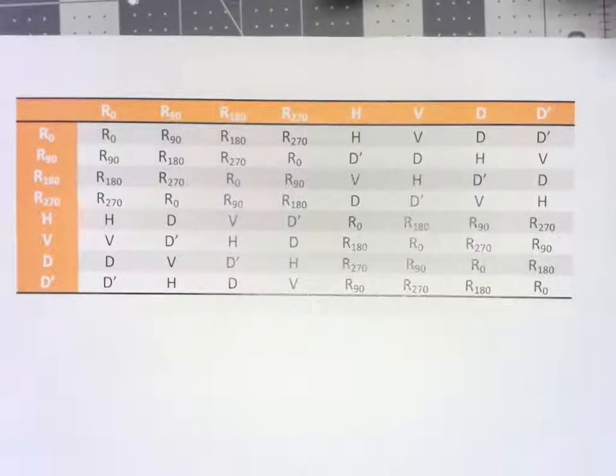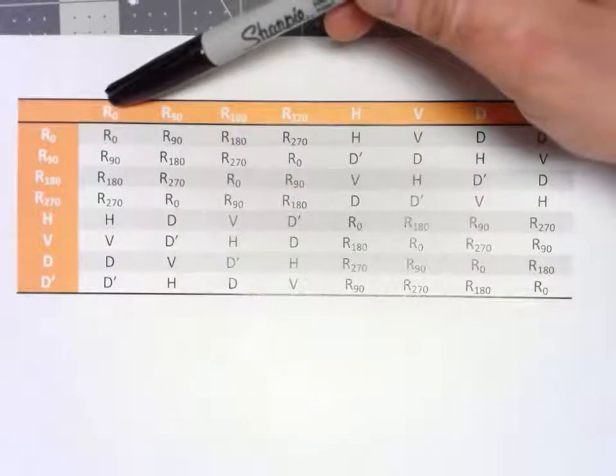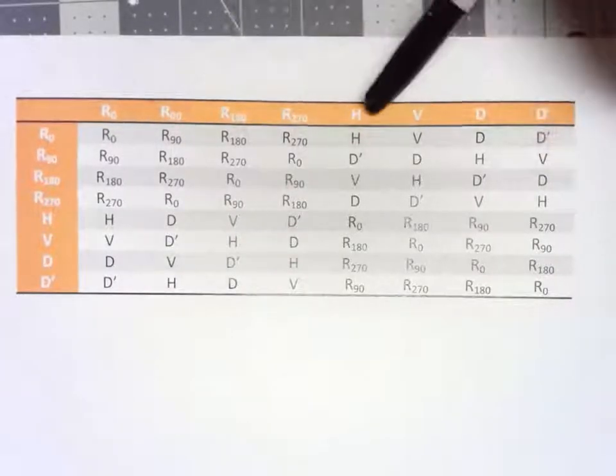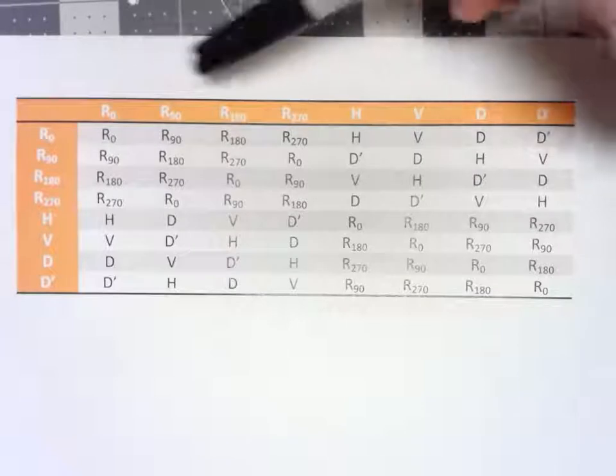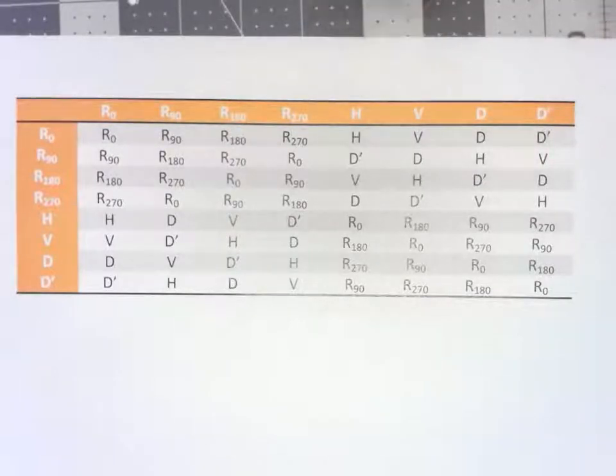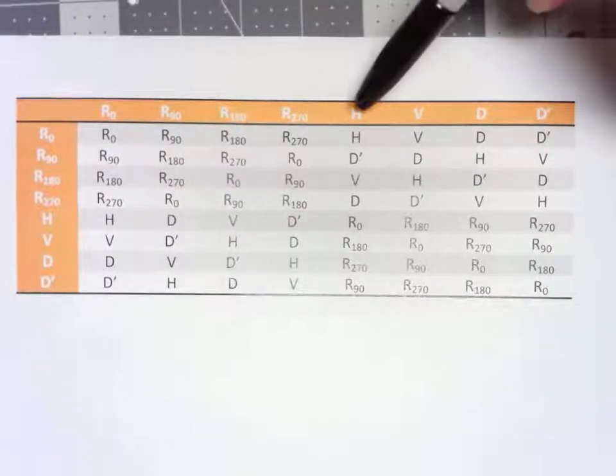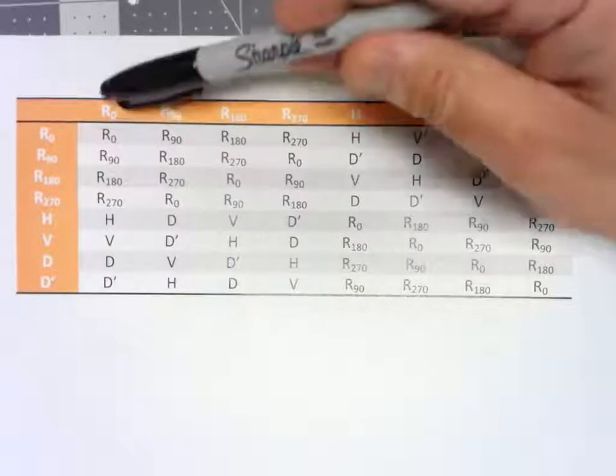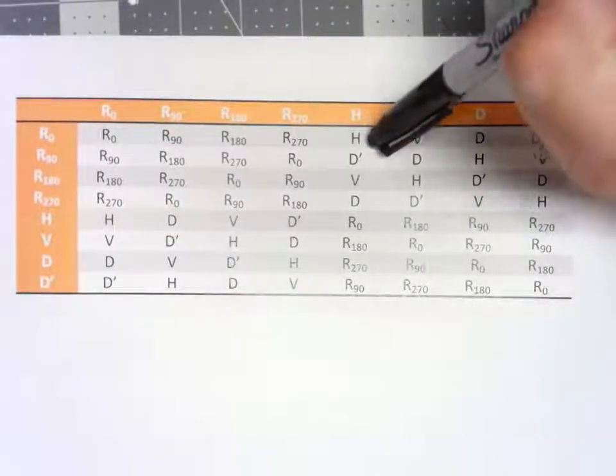First, and this is very obvious, doing the R0 composing it with any other move in any order doesn't change that move. If you do a horizontal flip, then a rotation by 0, you end up with a horizontal flip.